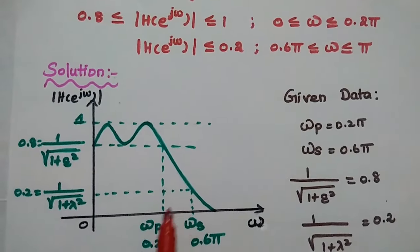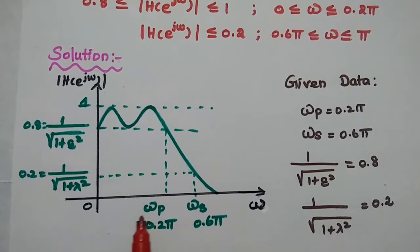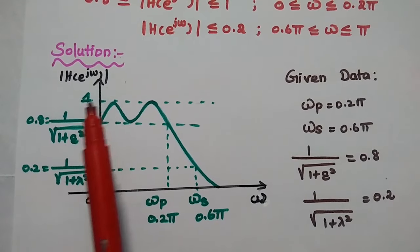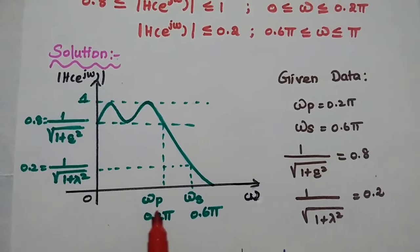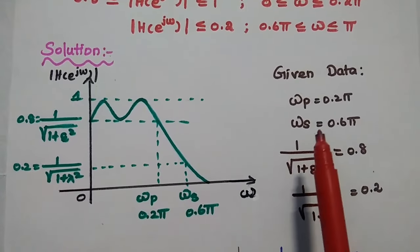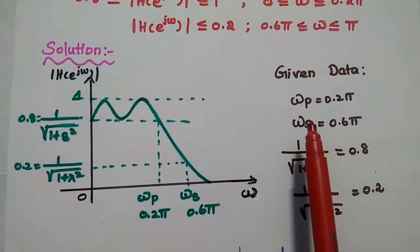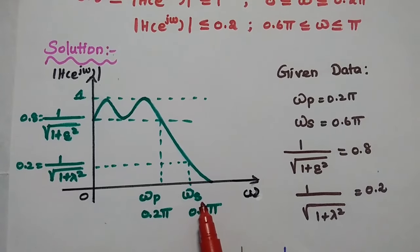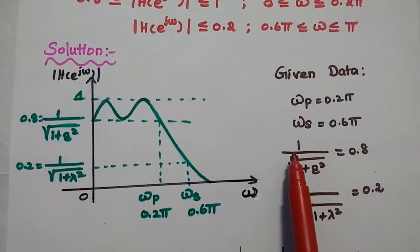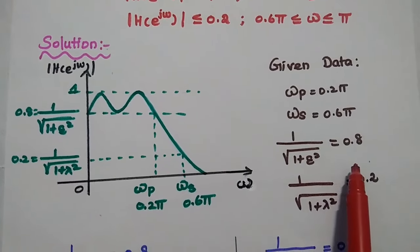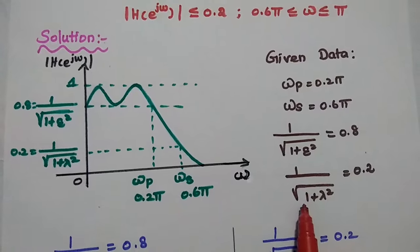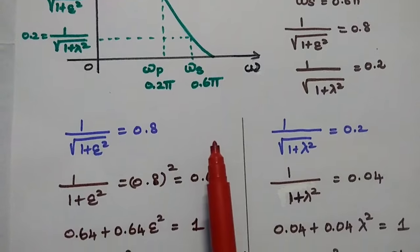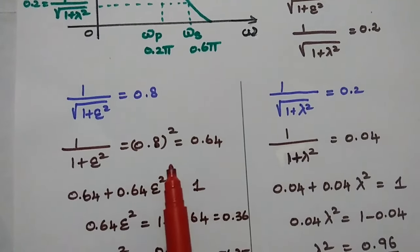In the solution, first we draw the magnitude response of the Chebyshev Type 1 filter, where the maximum value is 1. From this diagram we identify: the passband frequency ωp = 0.2π, the stopband frequency ωs = 0.6π, and the passband ripple condition 1/√(1 + ε²) = 0.8, and 1/√(1 + λ²) = 0.2. Next, we obtain the ε and λ values from this data.